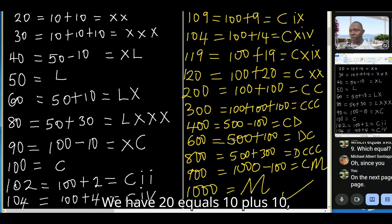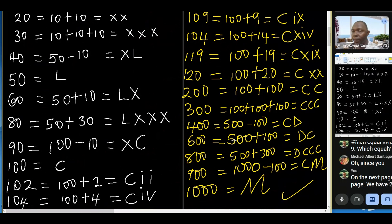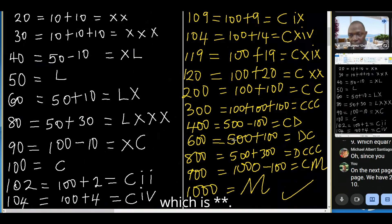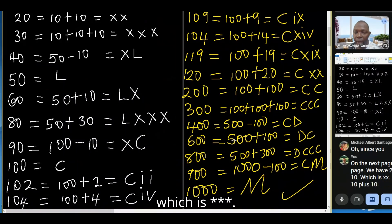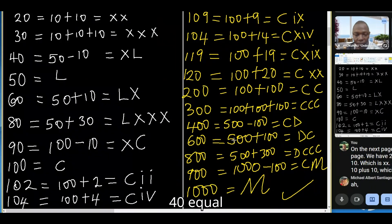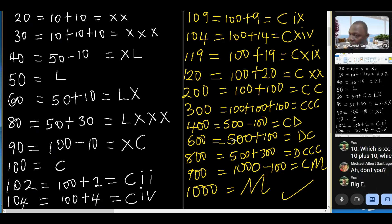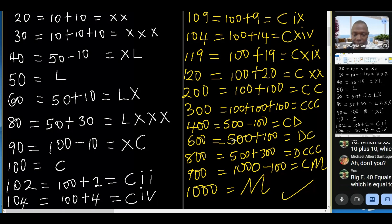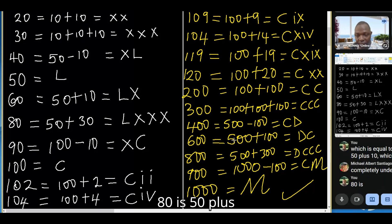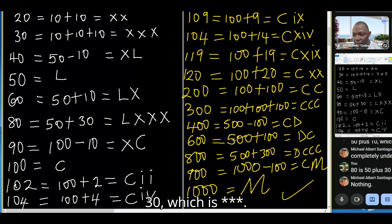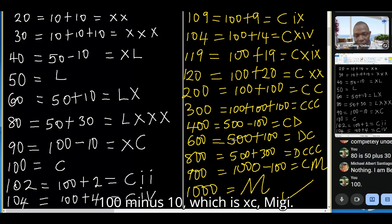Twenty equals 10 plus 10, which is XX. Thirty equals 10 plus 10 plus 10, which is XXX. Forty equals 50 minus 10, which is XL. Fifty is L. Sixty is 50 plus 10, which is LX. Eighty is 50 plus 30, which is LXXX. Ninety is 100 minus 10, which is XC.